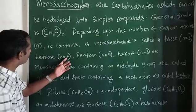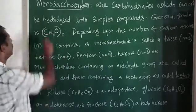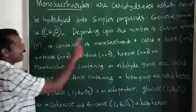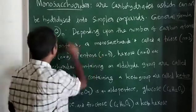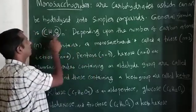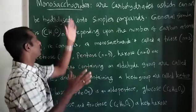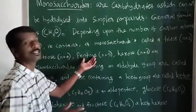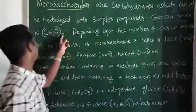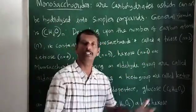When n equals 3, the monosaccharide is known as triose. When n equals 4, the number of carbon atoms is 4, and the monosaccharide is known as tetrose. When n equals 5, the number of carbon atoms is 5, and that type of monosaccharide is known as pentose. Similarly, when n equals 6, the monosaccharide is known as hexose.